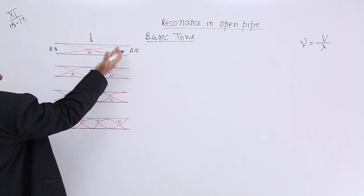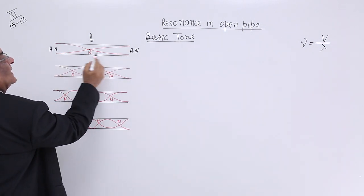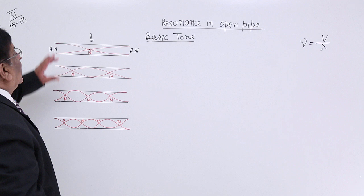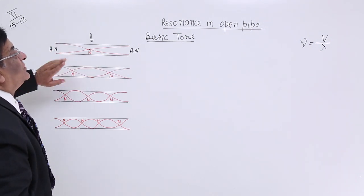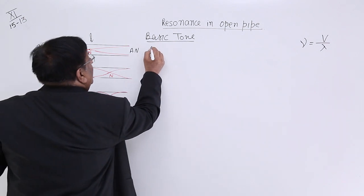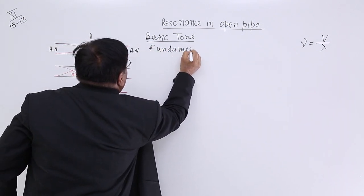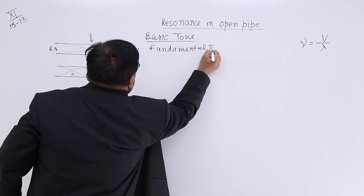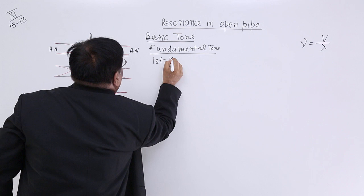If anti-node here, anti-node here, then where is the node? Answer between the two. That is why we make node here and this is the first time the stationary waves are formed. So this is basic tone or we can say fundamental tone or we call it first harmonic.